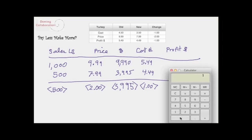So if we take the calculator: 1,000 times $5.49 is quite obviously $5,490.